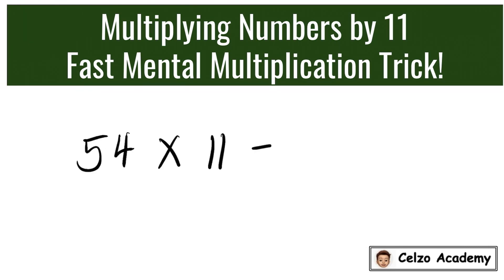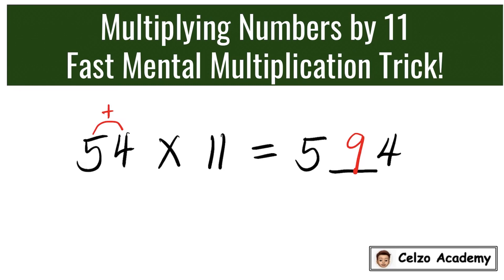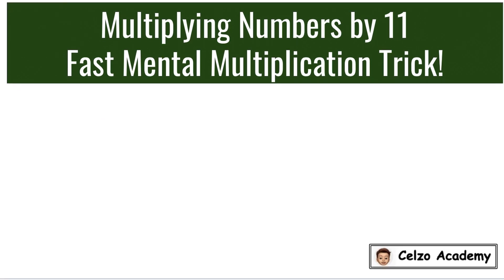Now let's try 54 times 11. The answer is 594. Just write the numbers 5 and 4 and leave a space between them. Add the digits 5 and 4, which is 9, and insert 9 between the 5 and 4. So the answer is 594.